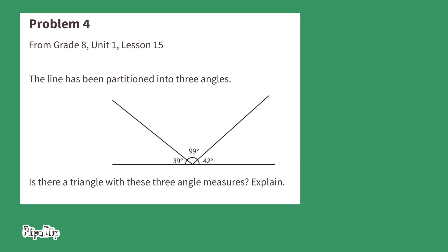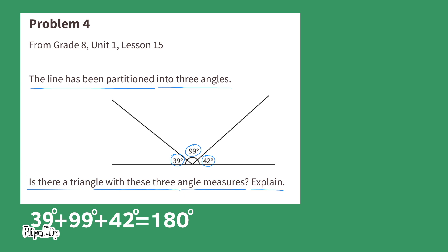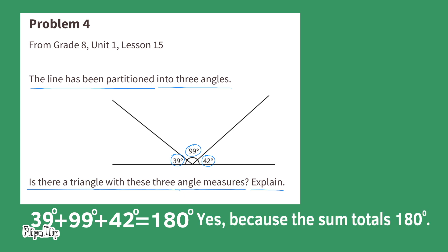Problem number four, from 8th grade, Unit 1, Lesson 15: The line has been partitioned into three angles. Is there a triangle with these three angle measures? Explain. 39 degrees plus 99 degrees plus 42 degrees equals 180 degrees. So the answer is yes, because the sum totals 180 degrees, and all triangles have three angles with a sum of 180 degrees.